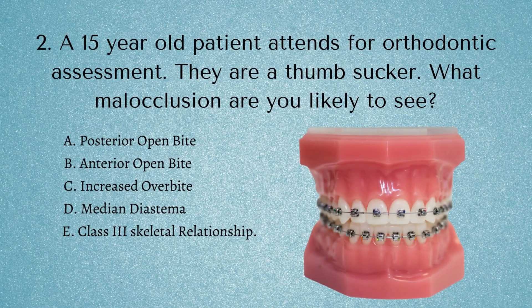Question 2: A 15-year-old patient attends for orthodontic assessment — they are a thumb sucker. What malocclusion are you likely to see? Is it A) a posterior open bite, B) an anterior open bite, C) increased overbite, D) a median diastema, or E) a class 3 skeletal relationship?